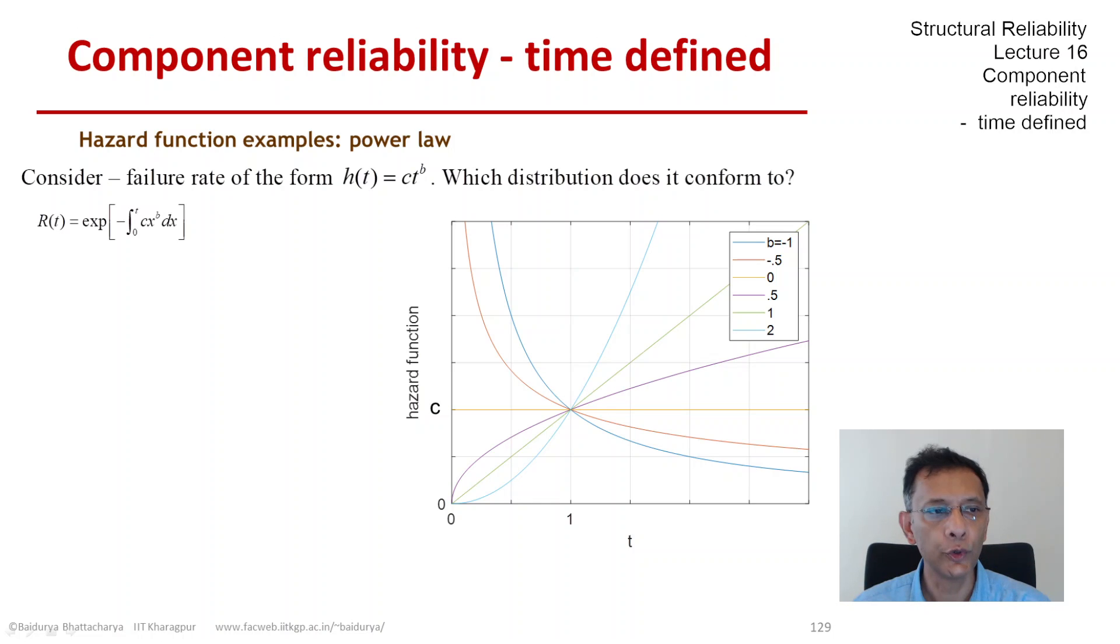We can go through the steps and come up with an expression: exponential of negative c times t to the power of b+1 divided by b+1. We need to make sure this is valid when b is greater than -1, so b equals -1 is not going to be admissible.